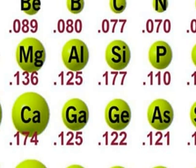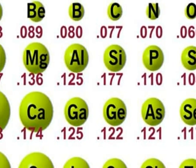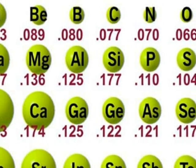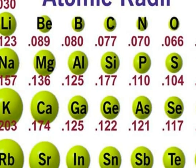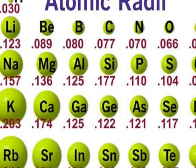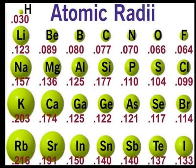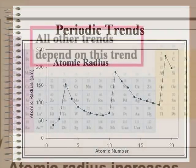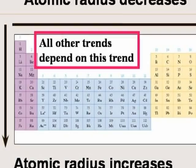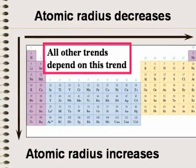You can see the changes in atomic radius as you go both down and across the periodic table. All of the other trends that we will learn about will depend on the changes in atomic radius.